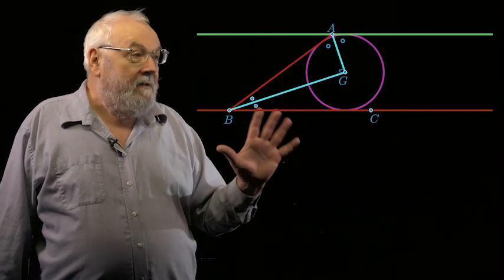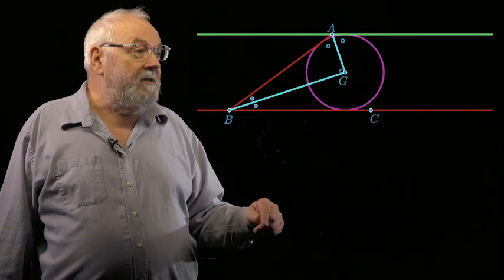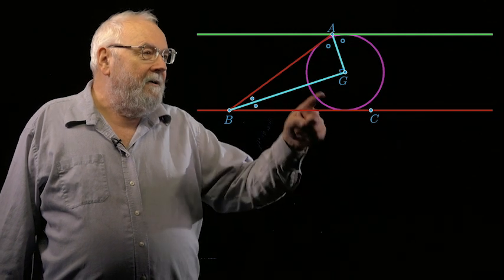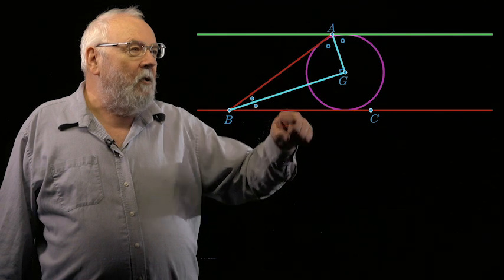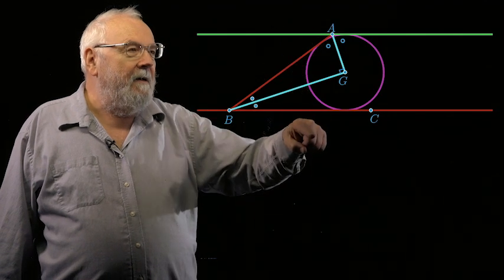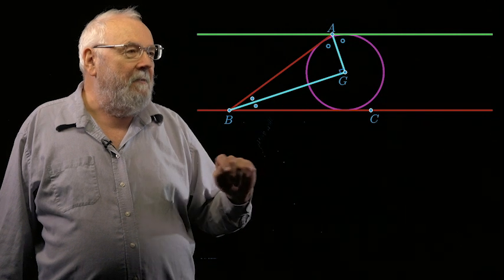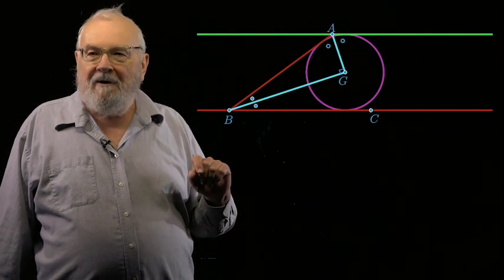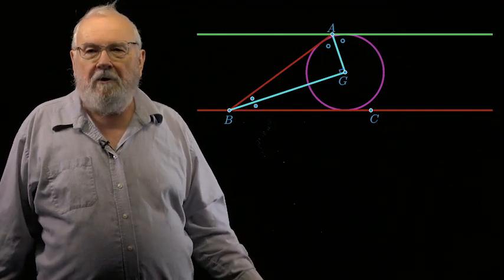So, assuming you've done that, then that circle is conjured into existence and the point G is the center of that circle. And so, of course, it is halfway between the parallel lines because the distance from that point G to each of the parallel lines is the same because it's the radius of that circle.